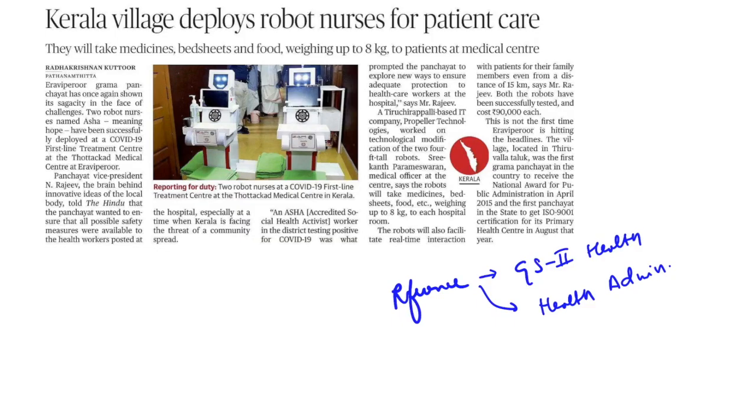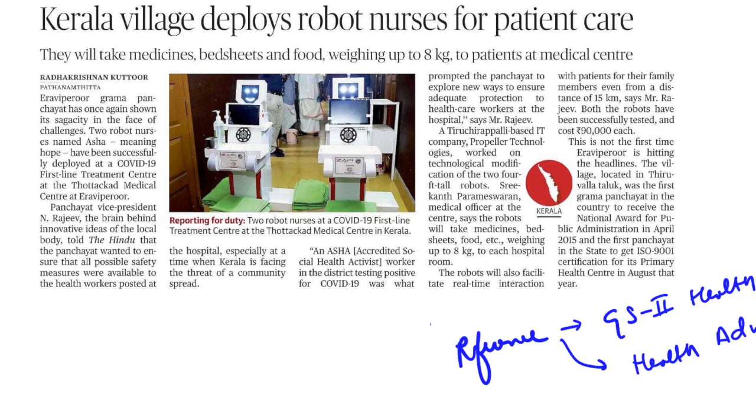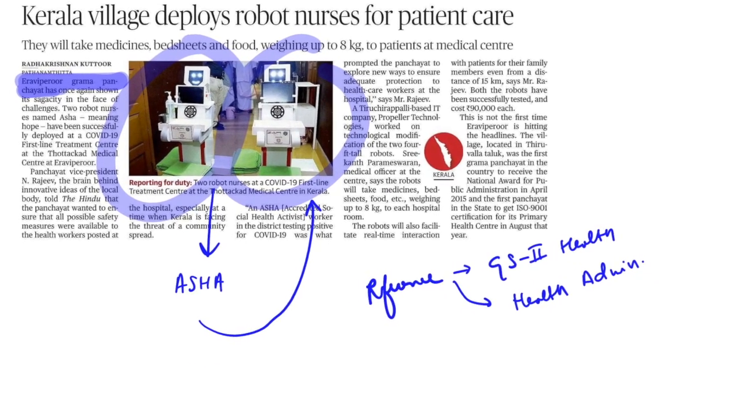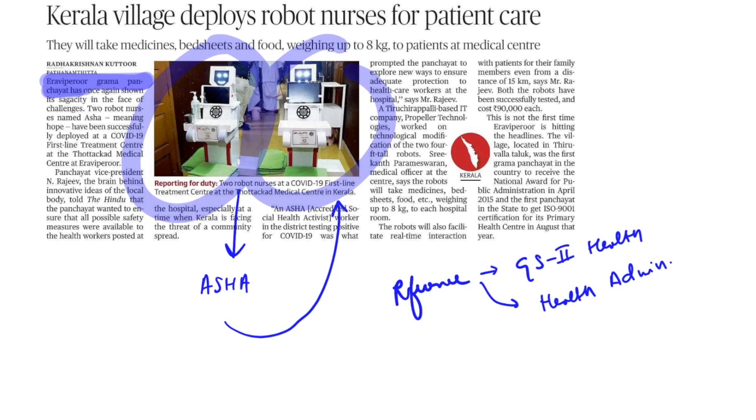Here we can see a very good reference with respect to the innovative mechanisms that are being taken. Please remember the name of the Iravi Perur Gram Panchayat in Kerala as they have deployed two nurses for the taking care of COVID-19 patients and they have been named as ASHA the Hope. This development comes when one ASHA worker was tested positive of COVID-19. And this step depicts how government is concerned for their health line front workers. As these robots can carry the medicine, bedsheets and foods, therefore, they can save the frontline health workers in getting infected by the COVID-19. This is a very good example and can be used in health governance, health administration, and as an example of innovation.